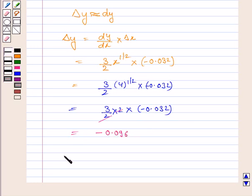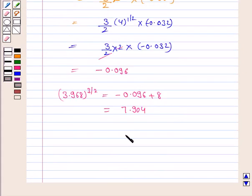Now 3.968 to the power 3 by 2 is equal to delta y plus 8. Now delta y is minus 0.096 plus 8. So this is equal to 7.904. Hence the answer is 7.904.